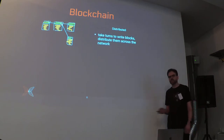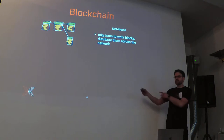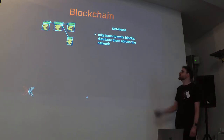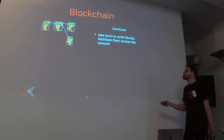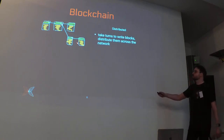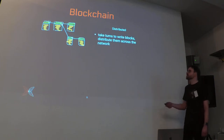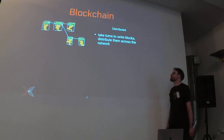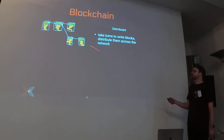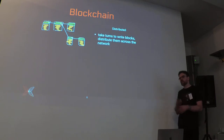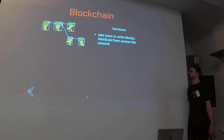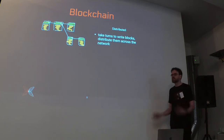Because propagating blocks through the network takes time, it's possible that when it's your turn you haven't seen the last block yet. You then add your block to the block before that, creating what's called a fork. Forks are resolved over time: the next leader adds their block to one of the two forks, making one longer, and everybody agrees that's the correct one. You get eventual consistency — recently added transactions aren't yet fixed, but deep in the ledger everything is settled.